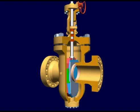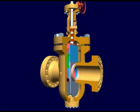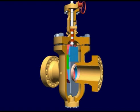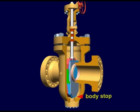The travel of the gate stops when the male half comes into contact with the body of the valve. This happens either at the opening or closing ends.